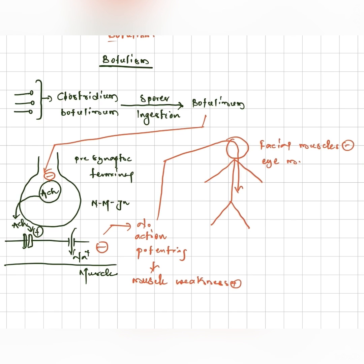Those are nothing but orbicularis oculi and other muscles. Next, laryngeal muscles also undergo weakness.